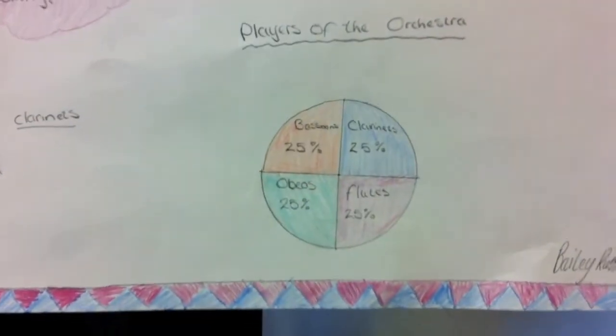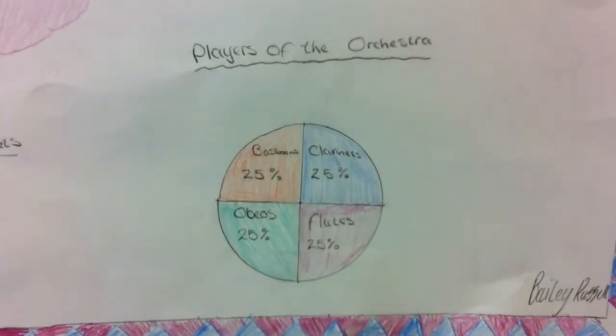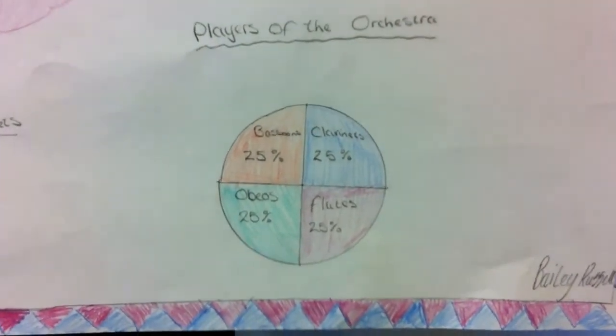This is the woodwind section. All the instruments are evenly distributed, 25% each, with bassoons, clarinets, oboes, and flutes.